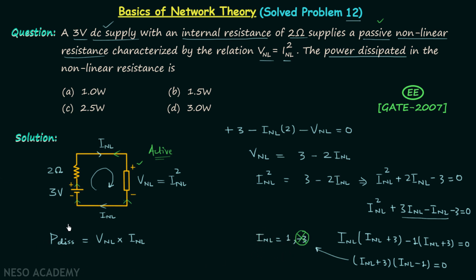Now we calculate the power dissipated. Since V_nL = I_nL², power = V_nL × I_nL = I_nL³. Substituting I_nL = 1, the power dissipated equals 1³ = 1 watt. Therefore, option A is the correct answer.